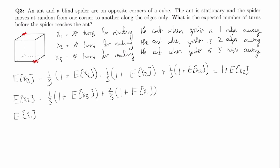We can also write E[x1]. If the spider is one edge away, in one third of cases he reaches the ant — so that's one third times one. In the other two cases he goes to a corner that's two edges away, giving two thirds times one plus E[x2]. So E[x1] equals one third times one, plus two thirds times one plus E[x2].